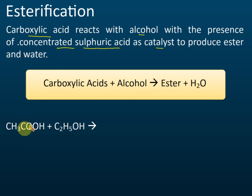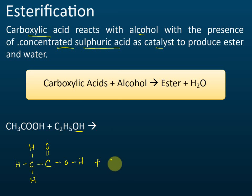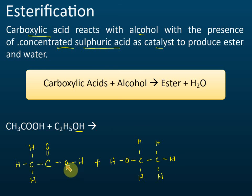Example: ethanoic acid reacts with ethanol. Let's draw the structural formula of ethanoic acid — it has the COOH group — and for ethanol we draw the OH group first, then the two-carbon chain. When ethanoic acid reacts with ethanol with concentrated sulfuric acid as catalyst, something specific happens.